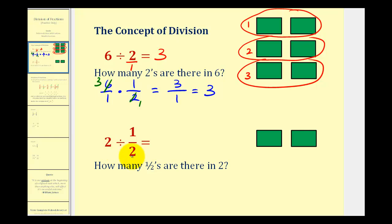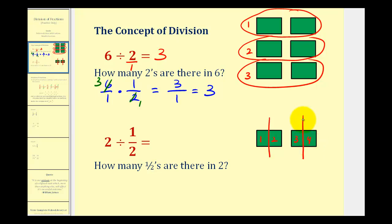Now let's consider two divided by one-half. We can think of this as asking how many one-halves there are in two. So if we go back to our model and make groups the size of one-half, we would divide this in half and divide this in half. Notice how now we have one, two, three, four groups the size of one-half. Therefore, two divided by one-half is equal to four.